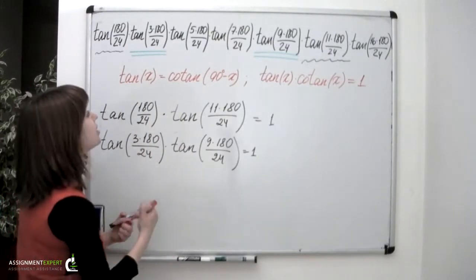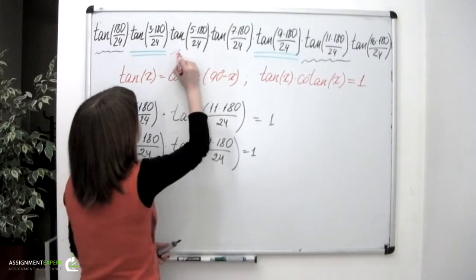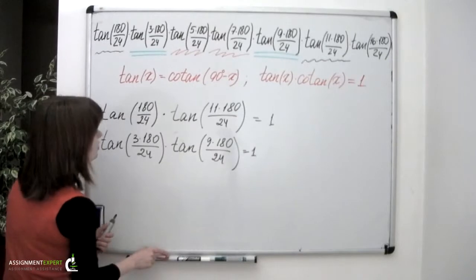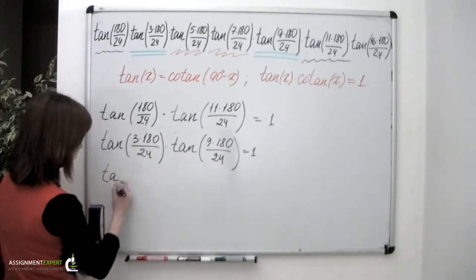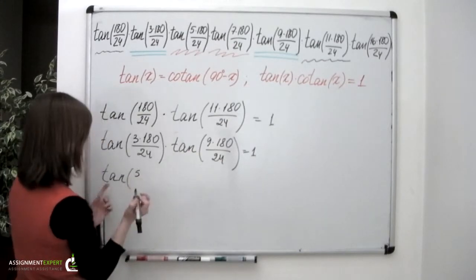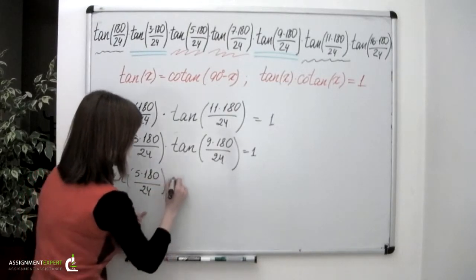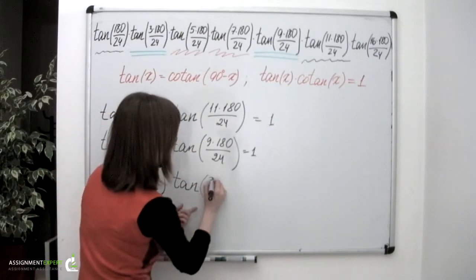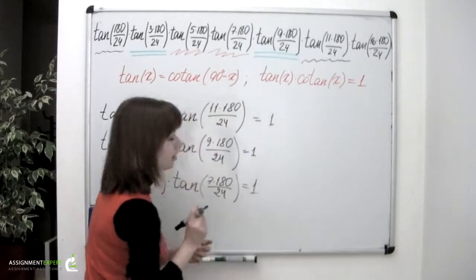Similarly, if we look at these two factors, we will also see that multiplying them gives another 1. So tangent of 5 times 180 over 24 times tangent of 7 times 180 over 24 equals 1.